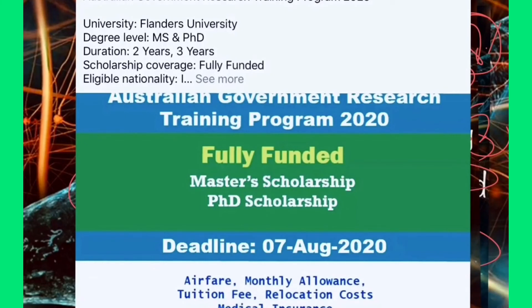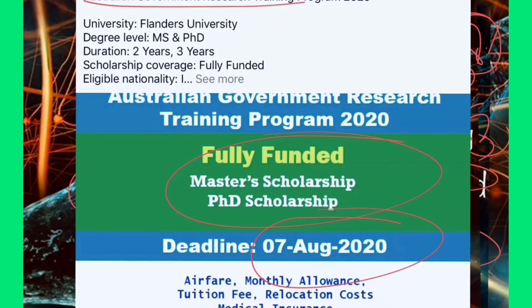Now in our scholarship section: there is a fully funded, 100% scholarship — the Australian Government Research Training Program. You can apply for an MS or PhD program. Search for the Australian Government scholarship programs on Google, find details, and apply. First get an offer letter, then apply for the scholarship position. Thank you so much for watching and please subscribe to my channel.